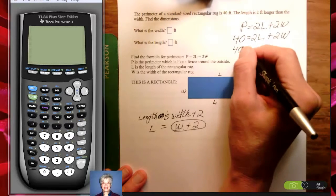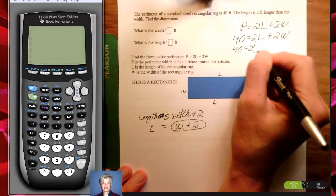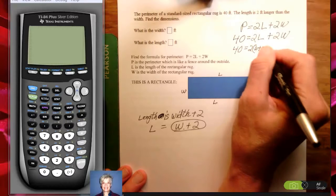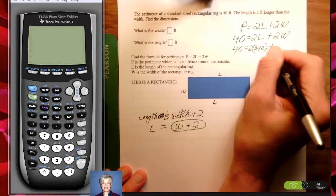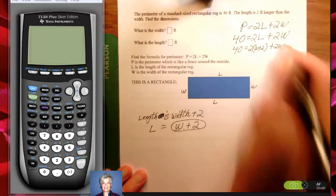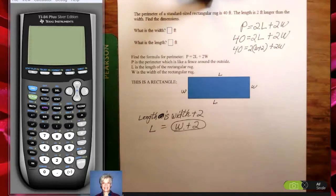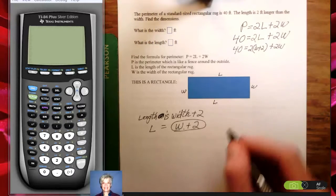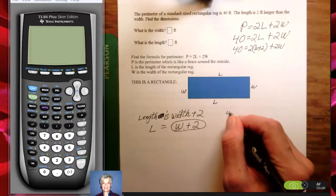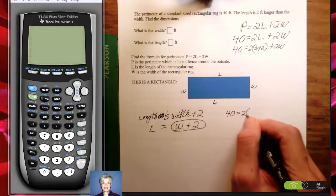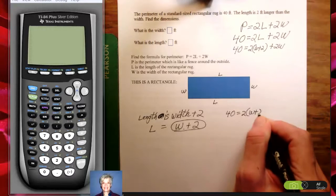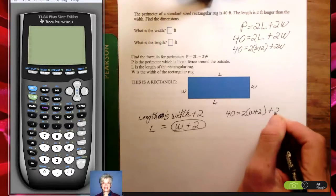40 equals 2 times W plus 2 plus 2W and now I'm ready. Now I have to solve this. I can solve this. I can do this problem.